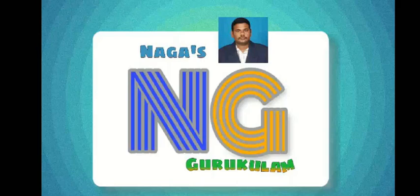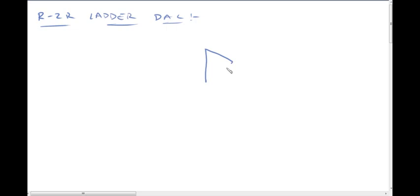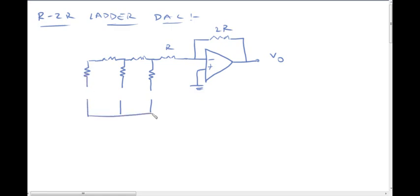Hi, hello viewers, welcome to Lagas Gurukulam. In this lecture video, we will cover the R-2R ladder DAC, a digital-to-analog converter. We will look at the circuit diagram and its operation. The op-amp is taken with negative and positive terminals, output V-naught, and feedback resistor R. The 2R resistor is connected to the positive channel ground, and resistors are connected in this manner with R and 2R resistors.